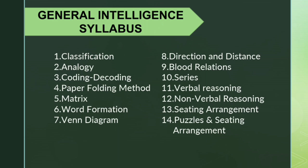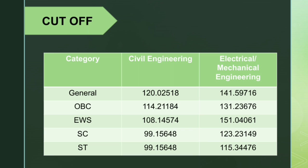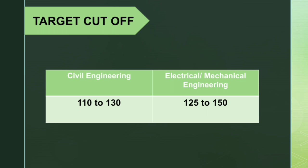The cutoff for civil is around 120 marks. For mechanical students, there is a 150 mark general category cutoff and 141 for other categories. Based on this, you can fix your target: civil engineering students should target 110–130, and electrical/mechanical students should target 125–150.